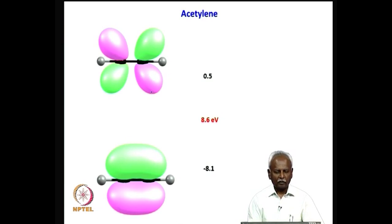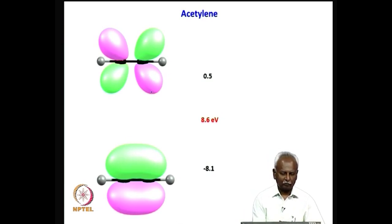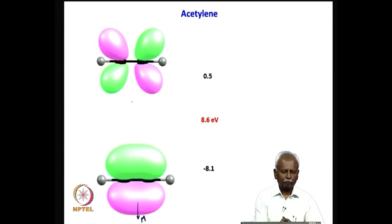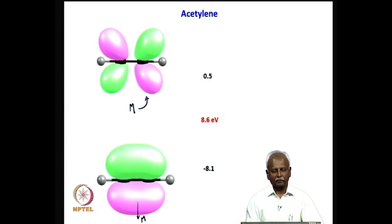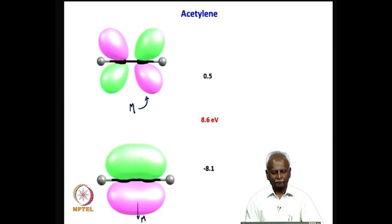You have a pair of electrons which can be donated to the metal, and a pair of electrons from the metal can be donated into the pi star orbital of the acetylene. There is clearly similarity between ethylene and acetylene in terms of the bonding interactions.